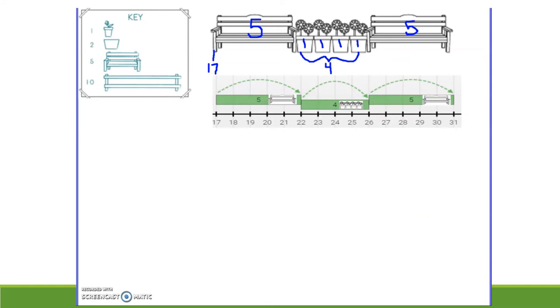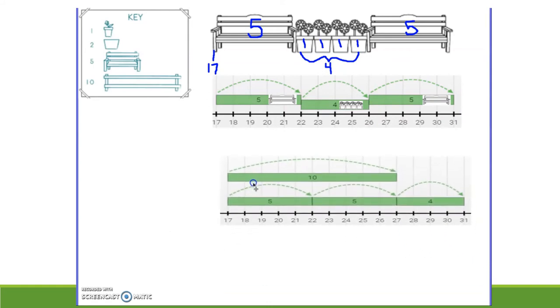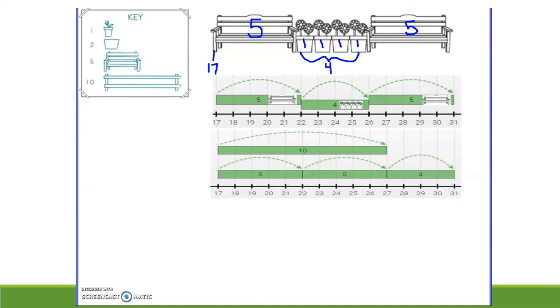However, it's easier to add the objects in a different order. I would like if we added the two benches first, because five and five makes a group of ten, and then we can add on the flower pots. So remember, we're starting at seventeen steps in, and then we will add our two benches, and then we'll add the four flower pots.